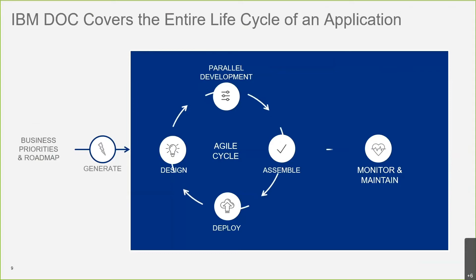When you generate an application with DOC, you generate a set of projects and configuration files that allow you to work comfortably across the whole cycle of your application — from the design phase to development of the optimization model, configuration or customization of the user interface, and integration. At any time, you're able to assemble all your components and deploy them on the cloud or local server to get feedback and loop again. Deployment has never been easier than it is today.